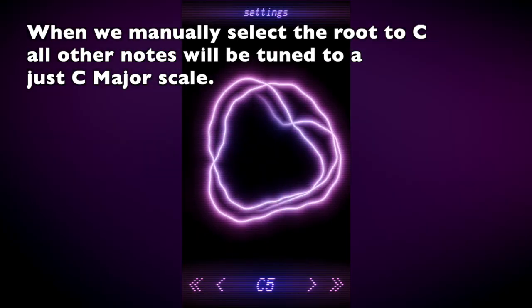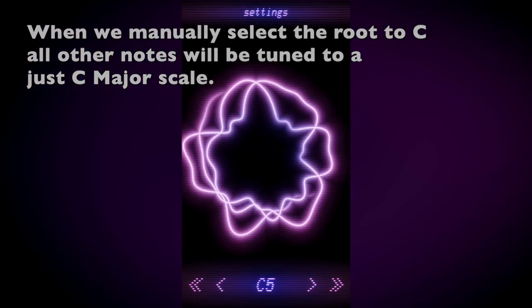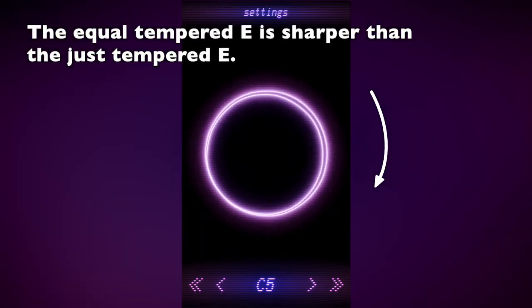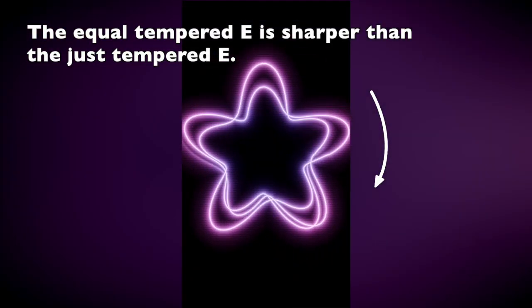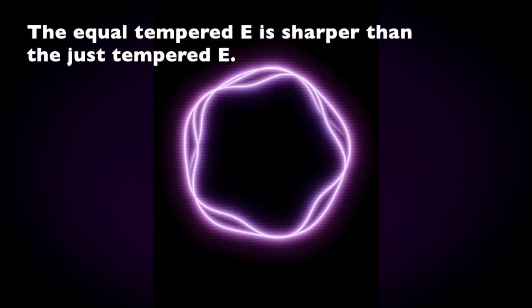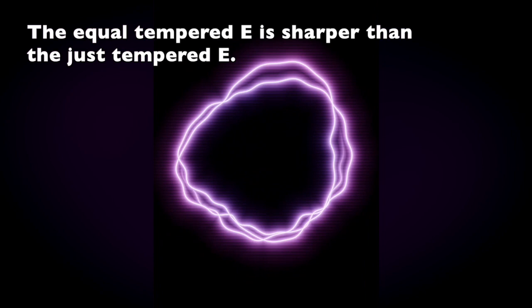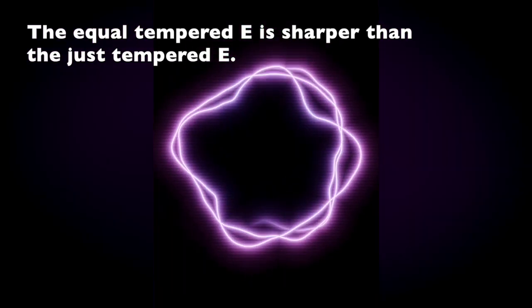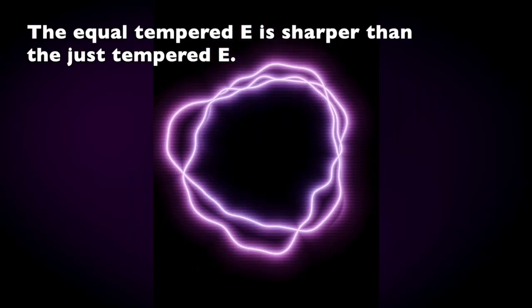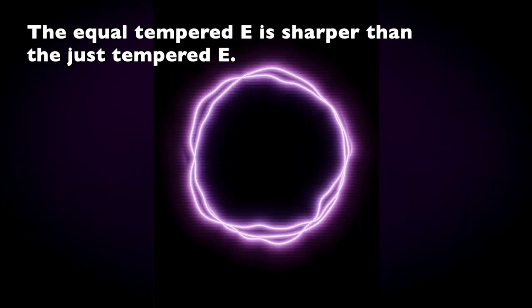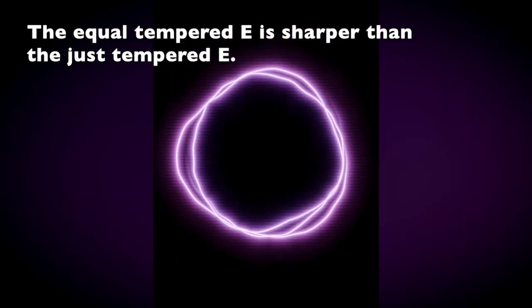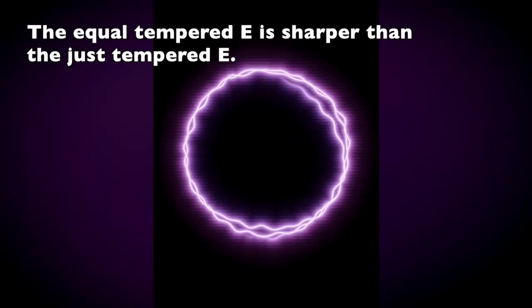Now if we play the note E, which is a major third above C, we see that it's slightly sharp. It's sharp because when we set the tuner to C but play the note E instead, the tuner is showing us just intonation in the key of C. But the E note that we are playing was generated using equal temperament.